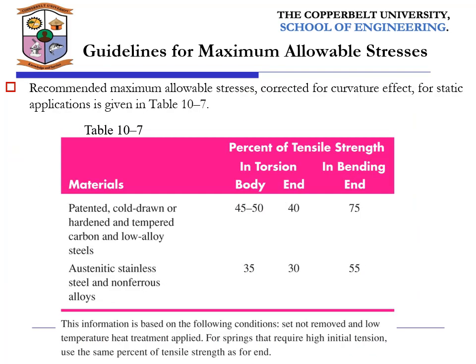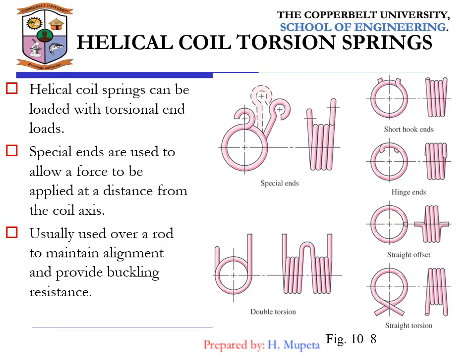Guidelines for maximum allowable stress in extension springs are shown in table 10.7. The recommended maximum allowable stresses — as a percent of tensile strength in both torsion and bending — are given for the body and ends, depending on the material.